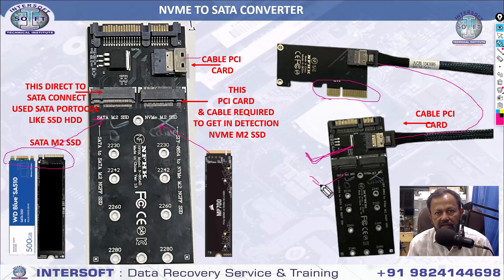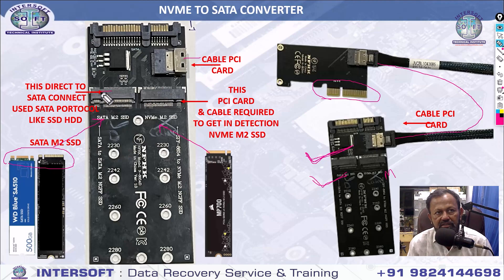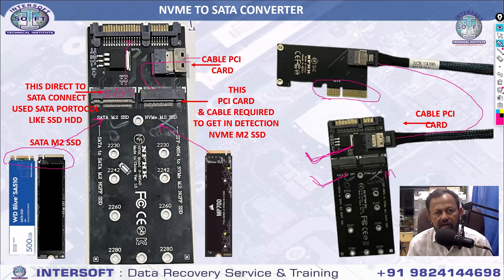It will run directly to SATA, but only with B key and M key — not with M key only. This is your M key, and this is your B and M both. You have to understand the concept of these two things. When you buy, not all NVMe will run — only SATA NVMe will run through this SATA card. For NVMe M.2, you require these connections and this PCI card. If you want these cards, you can buy from us.